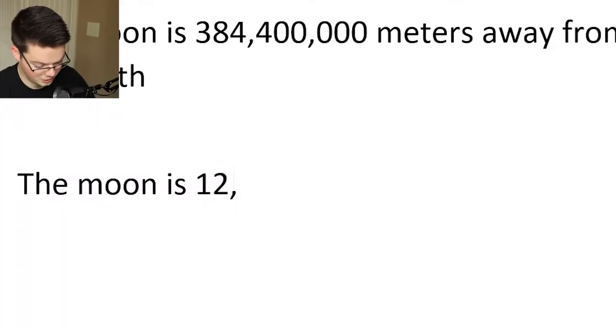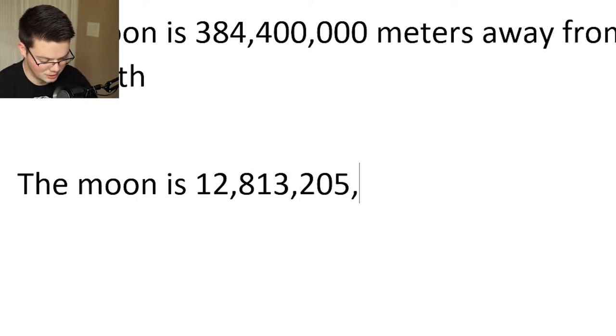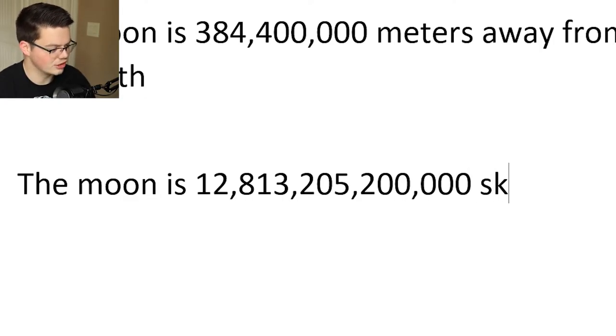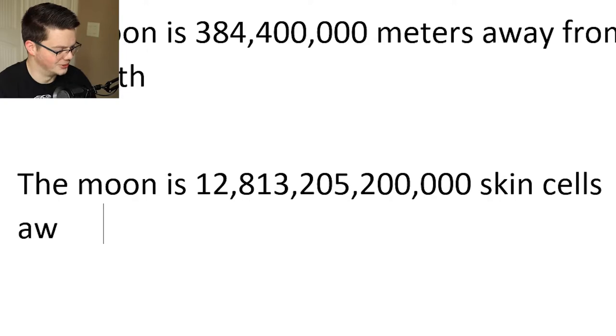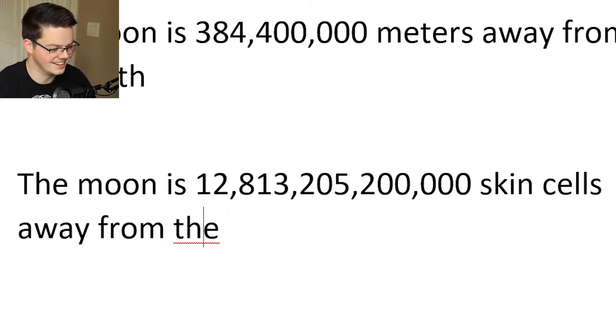That big number times 33,333 — let me turn it sideways to see all the zeros. Oh my gosh. The moon is 12,813,205,200,000 skin cells away from Earth, because we all needed to know that.